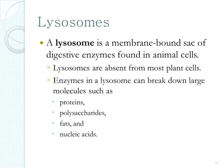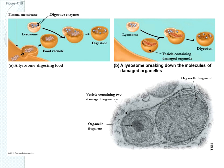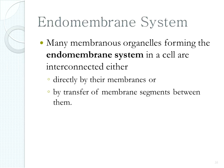Another membrane-bound organelle is the lysosome. It's a small membrane-bound sac about the size of a vesicle, but it contains digestive enzymes that can break down all of our macromolecules. If a cell takes in food, it can fuse a food vacuole with the lysosome to digest the food. If there's a dead or dying organelle, we can fuse it with the lysosome to break it down. If a protein has been improperly folded, we can fuse that vesicle with the lysosome and break it down.